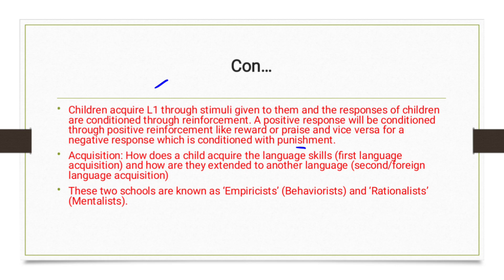This covers first language acquisition and how those principles extend to second or foreign language acquisition — both fall under the category of behaviorism. These theories relate to language learning, especially how a child learns language when born. The two schools are known as behaviorist (empiricist) and mentalist (rationalist).